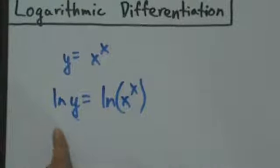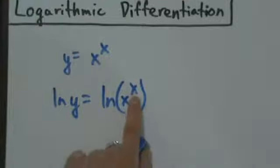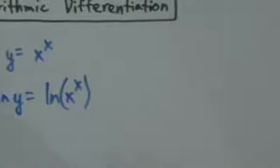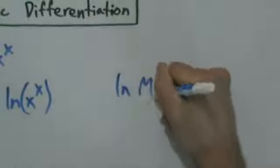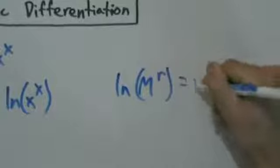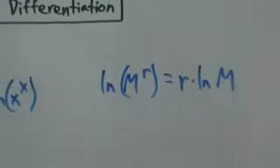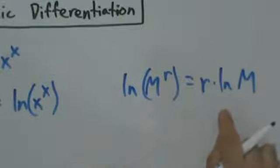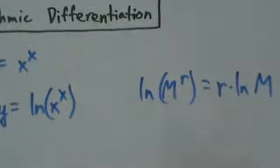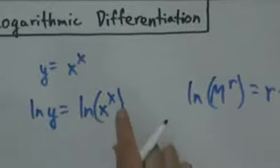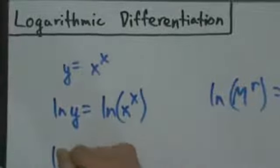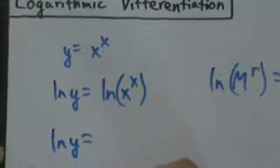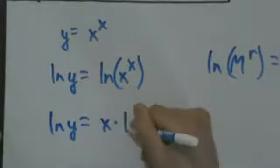Now we want to use that rule from pre-calculus that says if you have an exponent inside a natural log, you can pull it out and write it as a factor. That rule says: natural log of m to the r equals r times natural log of m. It works for any valid log base, but we're just dealing with natural logs. Here we have an x in the exponent, so we can pull it out and write it as a factor: natural log of y equals x times natural log of x.